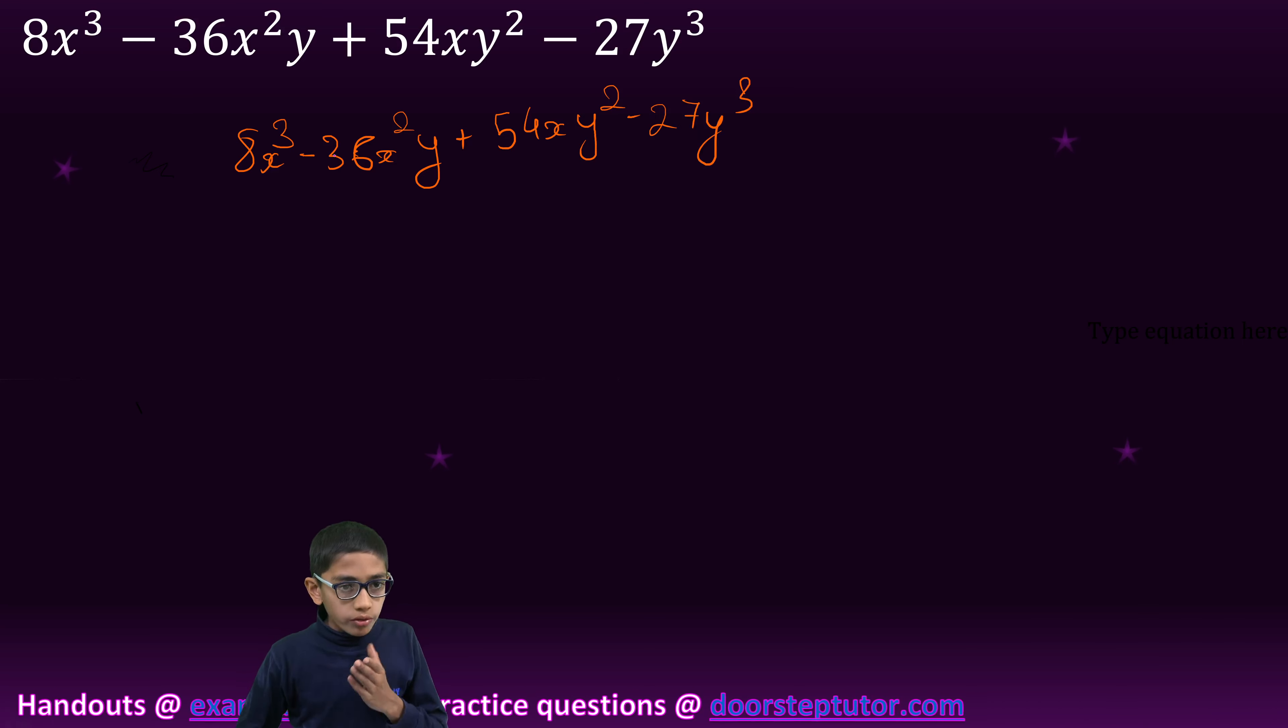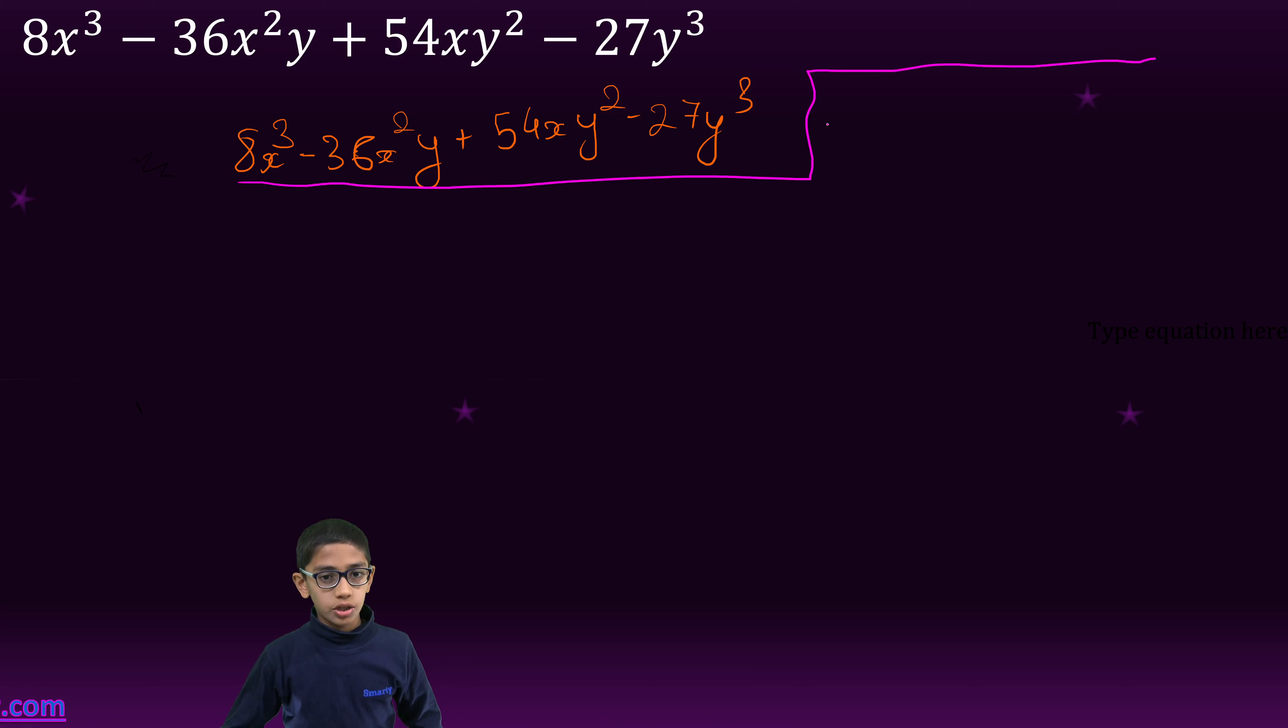We will find the cube root of the first term which is 8x³. So it is 2x. We will write the cube root of 2x here, 8x³, and subtract this.